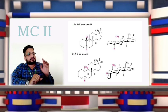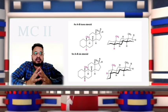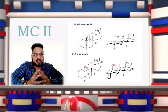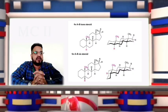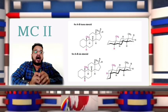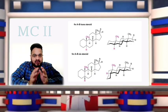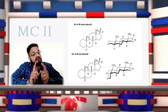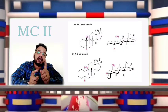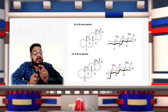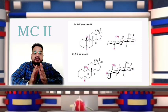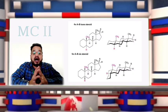Steroids can have either cis or trans fusion of the A and B ring. However, the other ring fusions — that is B and C ring, and C and D ring — are usually in trans configuration in the majority of cases.